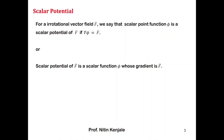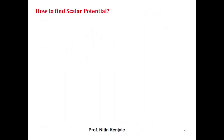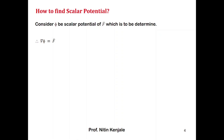Whenever one has to find the scalar potential of f bar, one has to find the phi whose gradient is f bar — that phi is the scalar potential of f bar. Let phi be the scalar potential of f bar which is to be determined. Then we know gradient of phi is f bar.